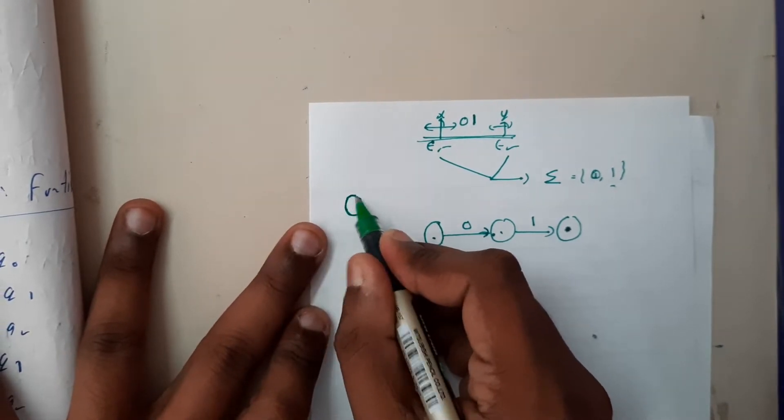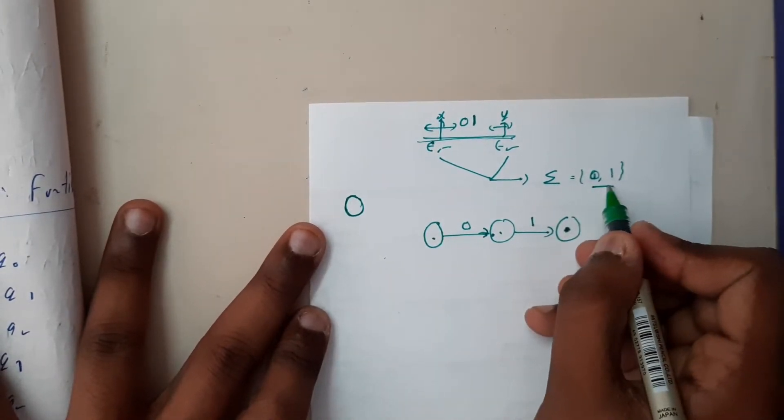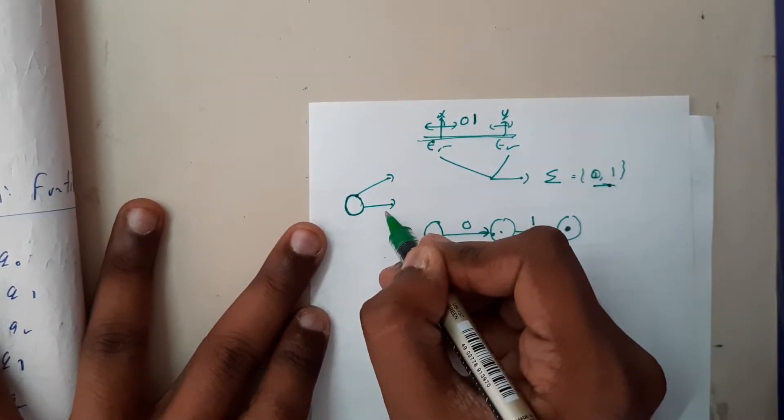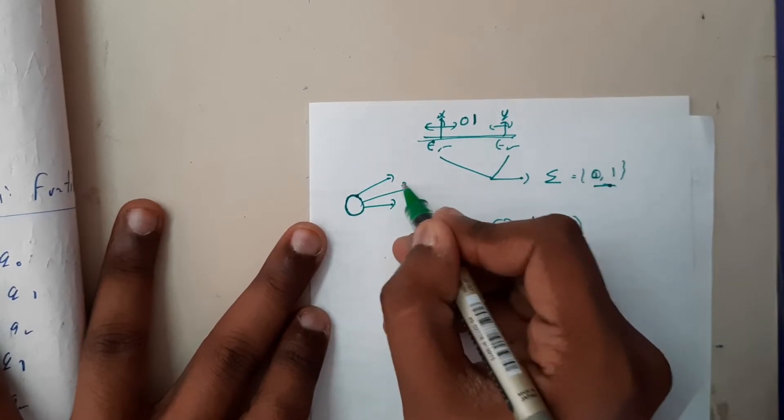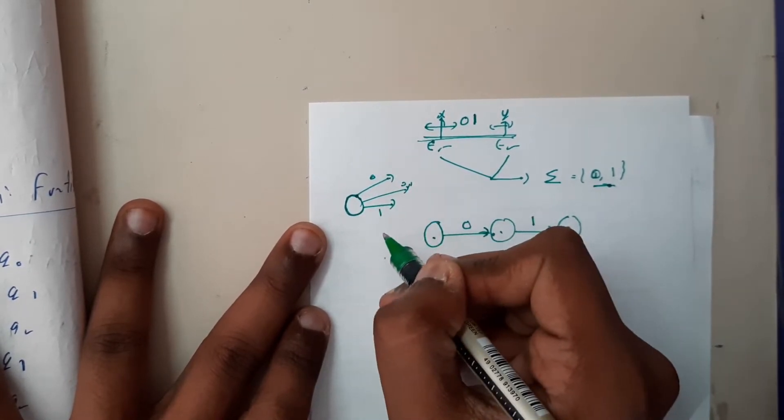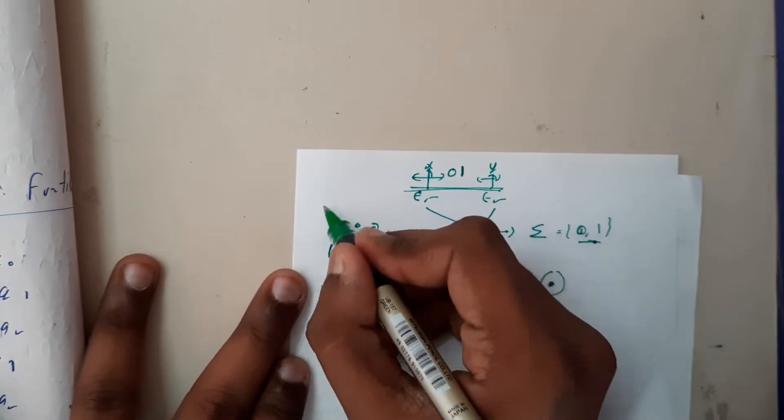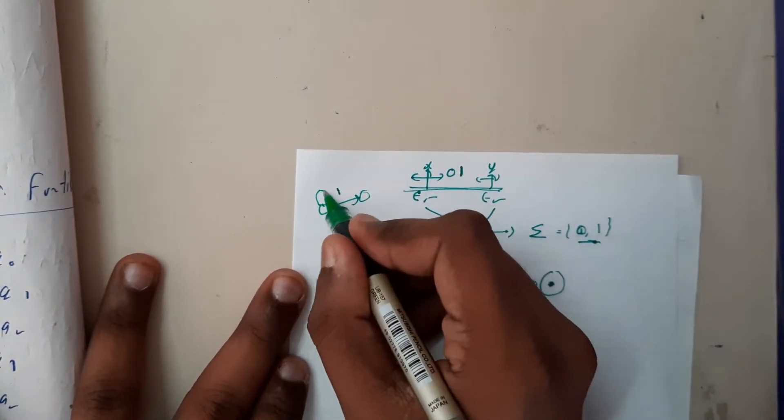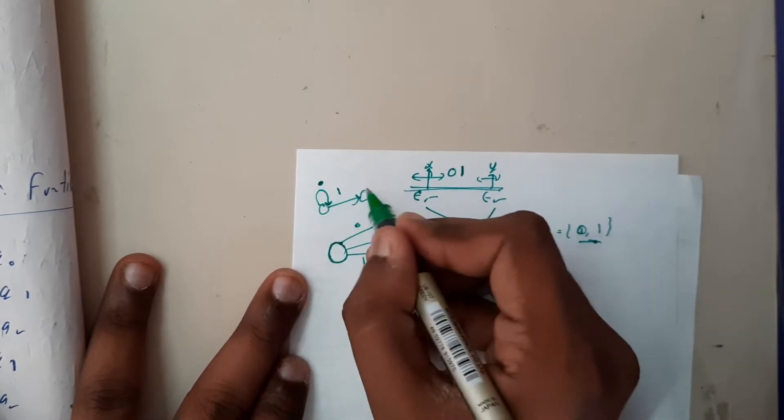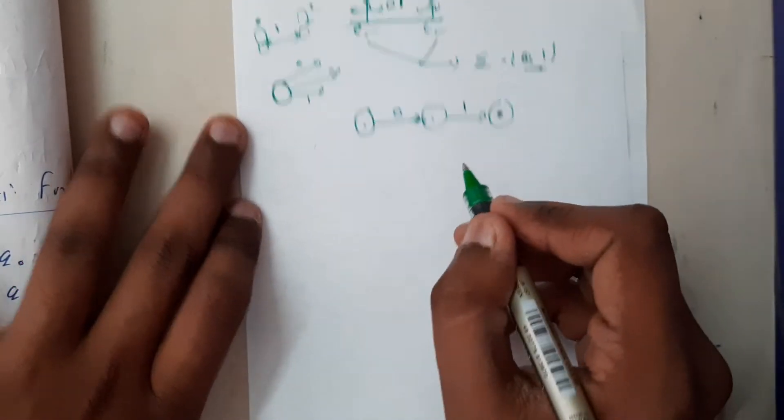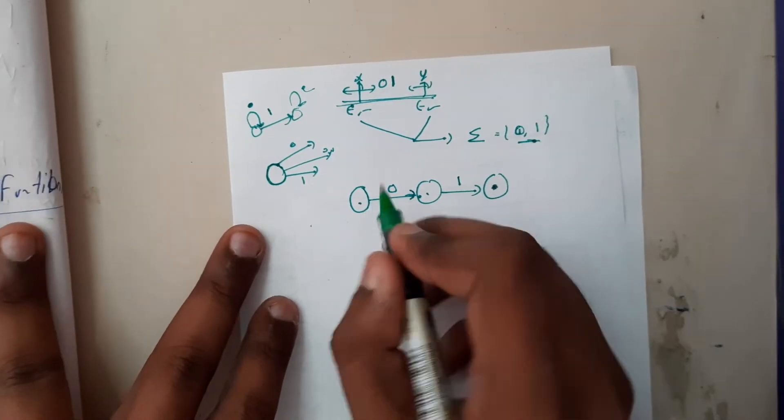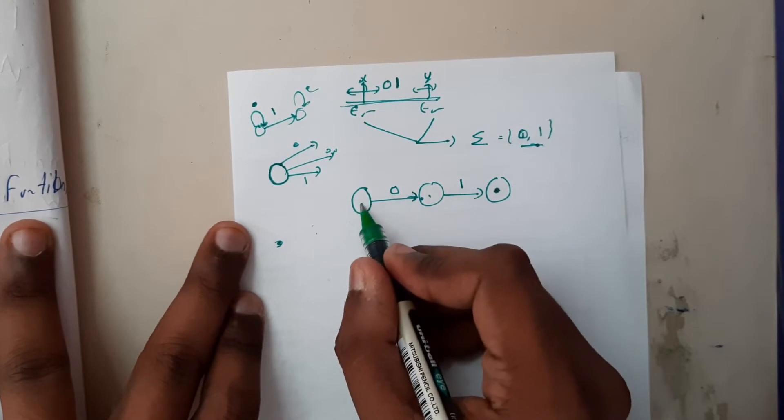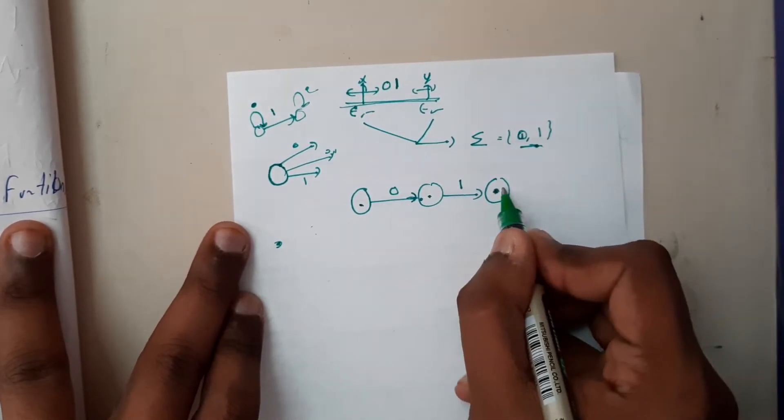Remember one more thing: if you are in a state and you are having two types of inputs, always try to find two separate outputs. Try the combinations for zero and one separately because whenever you're drawing simple things, you'll be missing transitions.